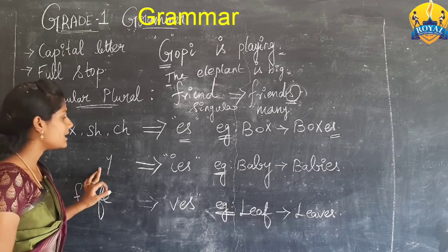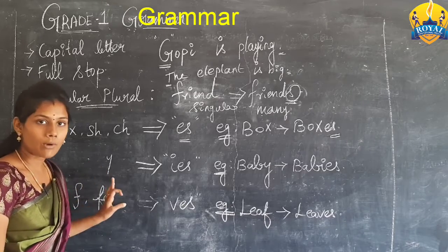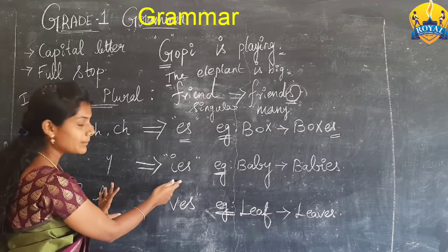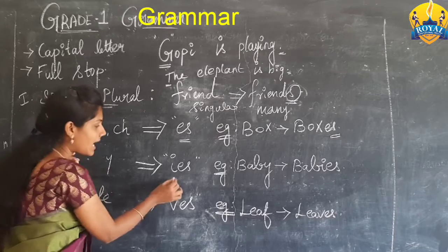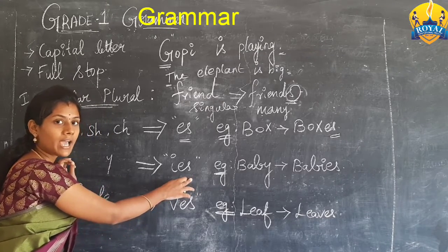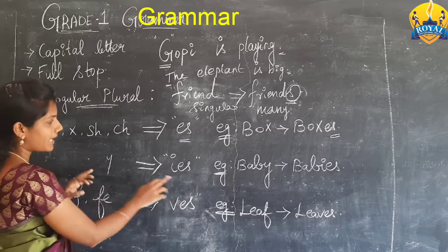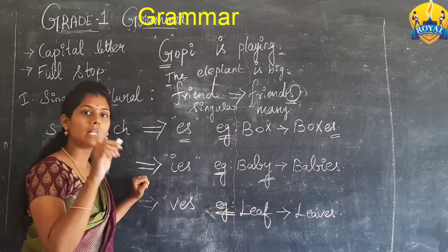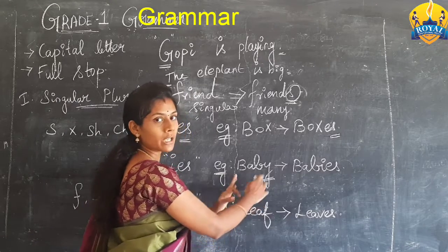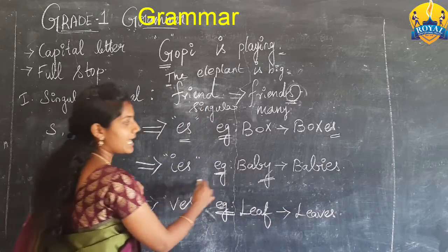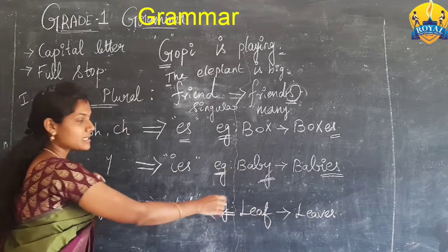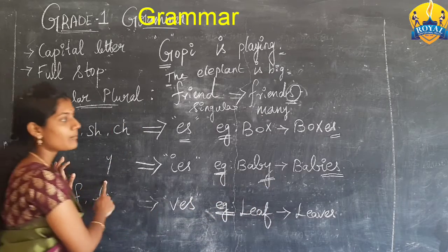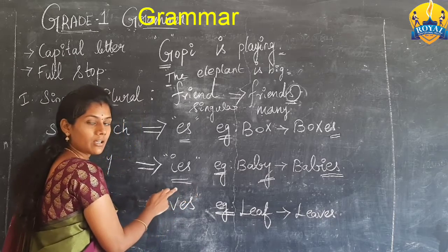The next hint is Y. When the word ends with Y, we change the singular word into plural form by adding IES. For example, 'baby' — B-A-B-Y — is a single baby. It goes into plural form by adding IES, because the word ends with Y. Are you all clear now?